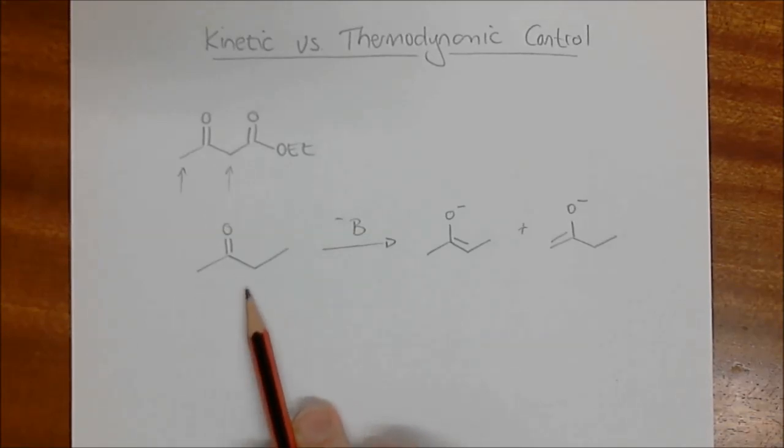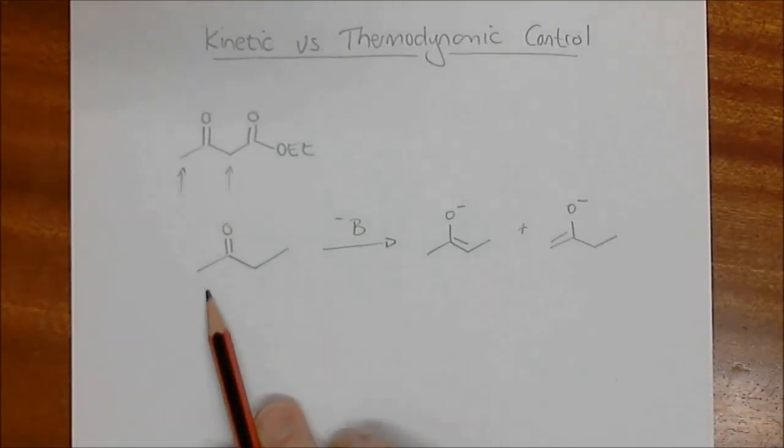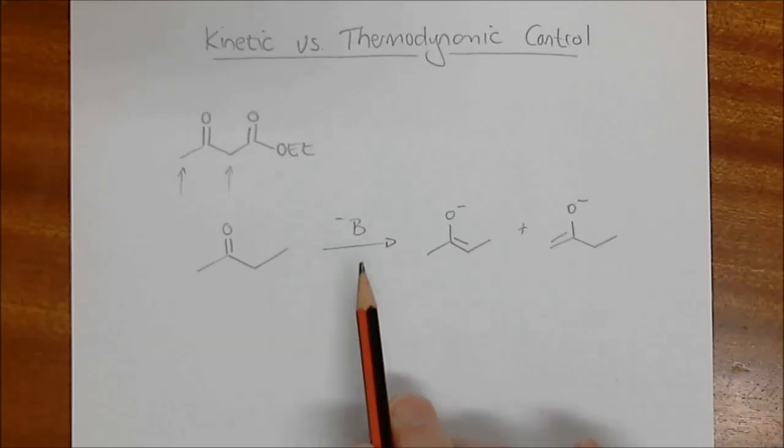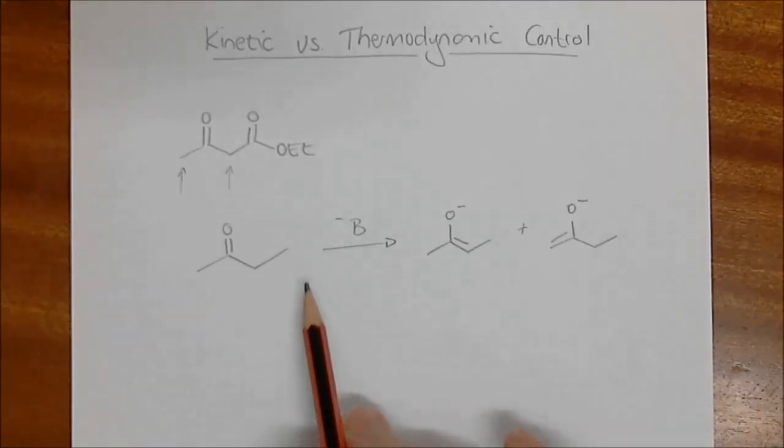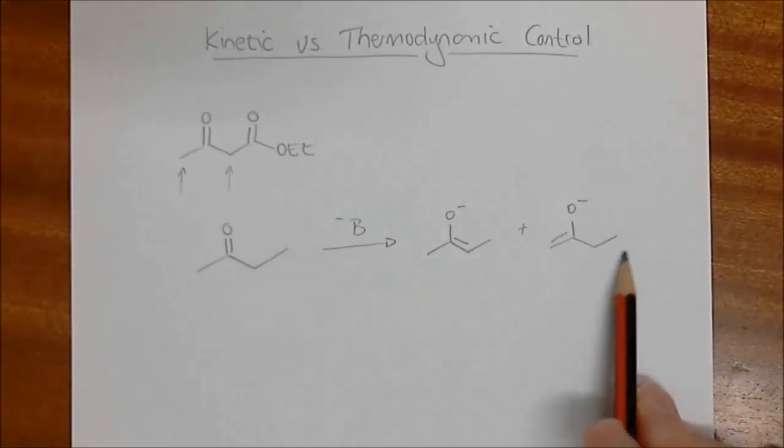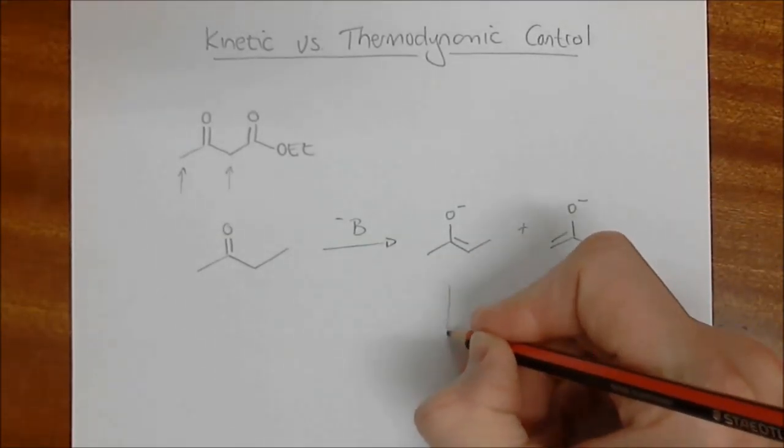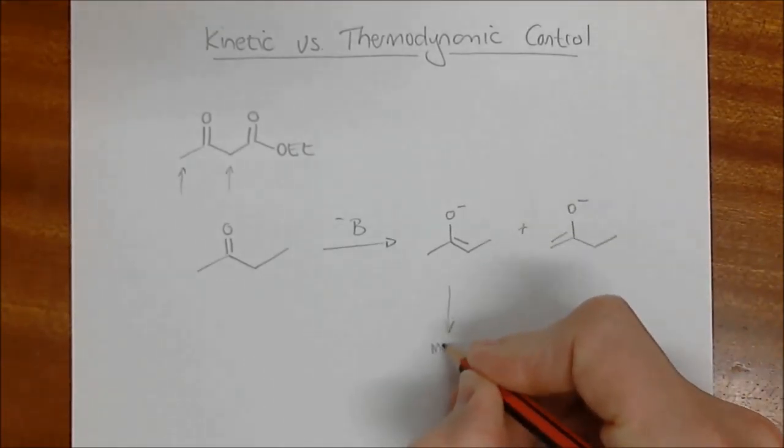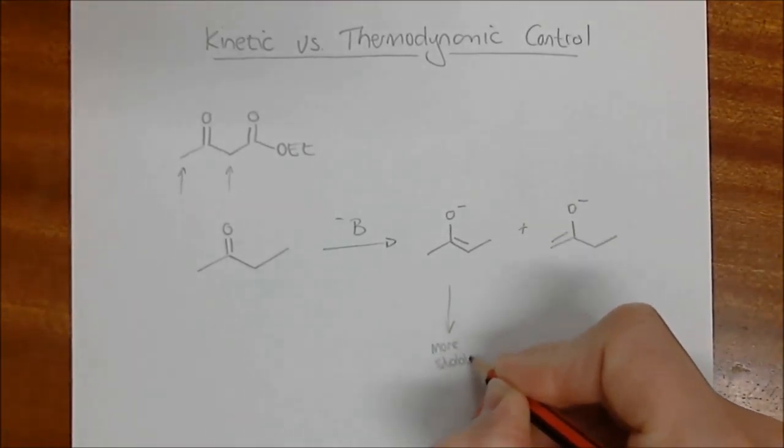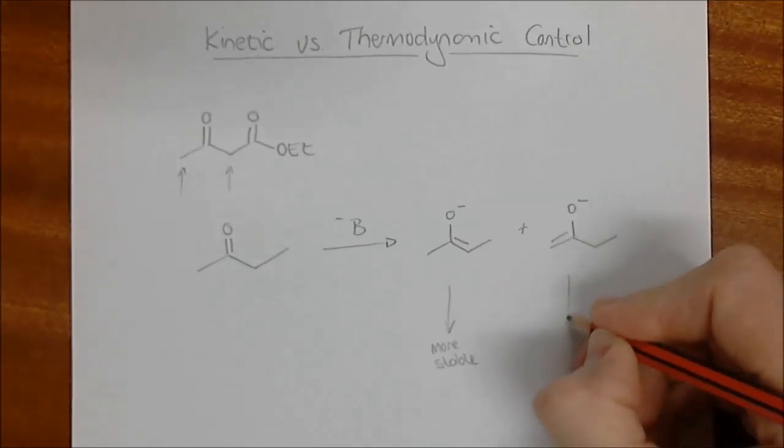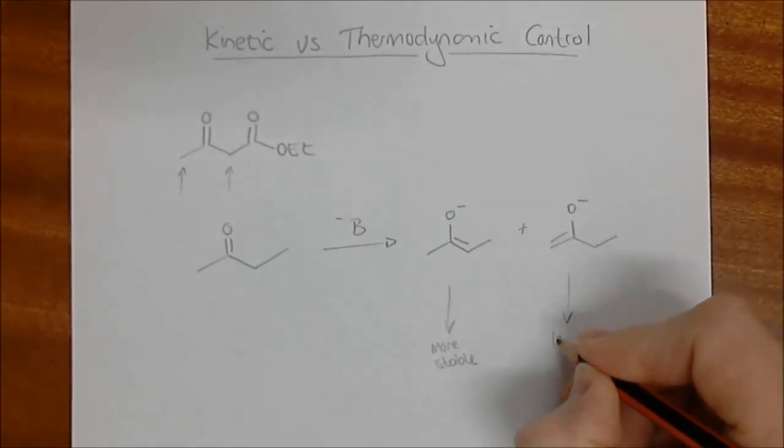Now in terms of acidities of protons, they are basically the same. There isn't a difference between which one is more acidic or less acidic. The differences are so small that we can't select by using a strong or weak base. But just looking at these two enolates, there's some things that we can say about them. This one over here is more stable and the other one, the terminal enolate, is less stable.